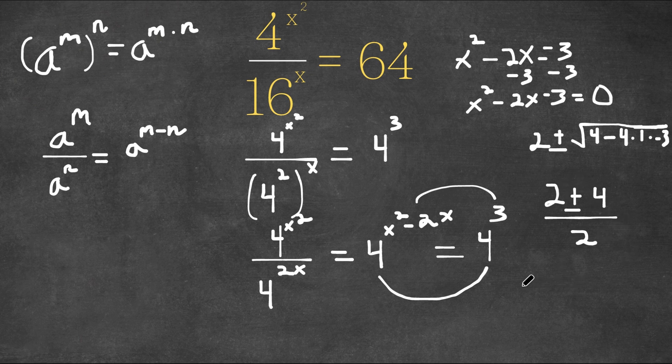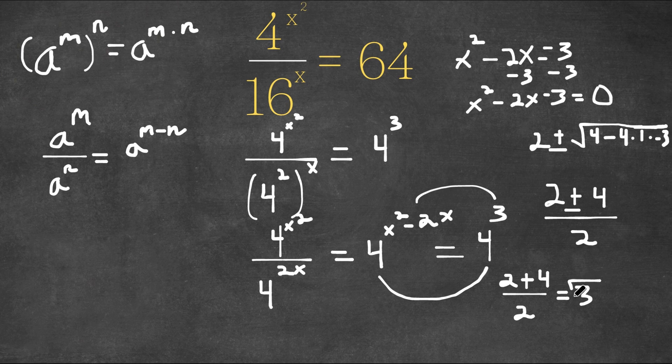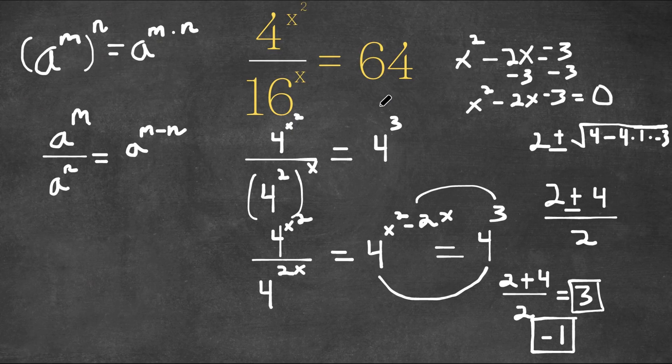Now, this gives us two equations or two expressions. 2 plus 4 over 2. 2 plus 4 is 6. 6 divided by 2 is 3. So this is one solution. And we also have 2 minus 4 over 2. 2 minus 4 is negative 2. Negative 2 over 2 is negative 1. So negative 1 would also be another solution. So these are our two solutions to this problem.